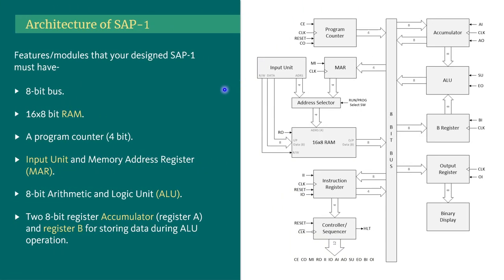Here we can see the architecture of SAP-1. All the modules or blocks needed for designing it are shown here. This is just an overview of the whole design, and all the modules will be discussed in great detail in the later part of the lecture.